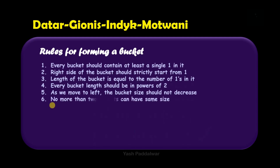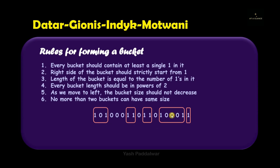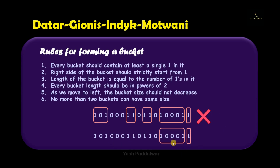The last rule says that no more than two buckets should be of the same size. In the previous example we created two buckets of the same length two — that is valid. But if we create a third bucket of length two, it violates the rule. You can have two buckets of the same length, but not more than two. In the valid example, we have two buckets of length two and then we move to length four.